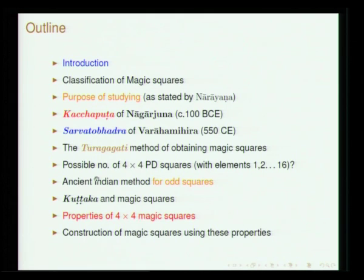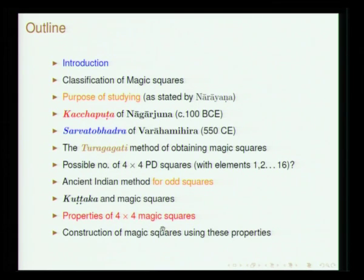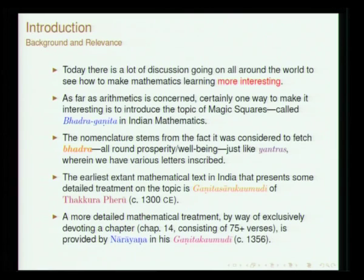We will start with the 4×4 magic square, which is called Samagarbha. PD here refers to Pan-diagonal; we will see what pan-diagonal means and how many pan-diagonal magic squares can be constructed. This is an interesting question posed by Narayana Pandita in his Ganita Kaumudi, and he gives the answer: 384. We will also discuss the ancient Indian method of constructing odd squares, the relation between Kotaka and magic squares, properties of 4×4 magic squares, and how from these properties one can construct magic squares elegantly.